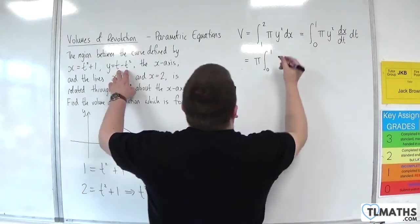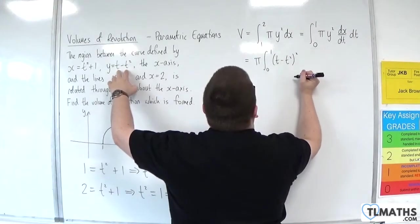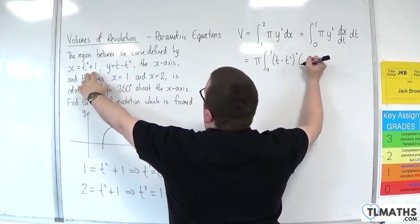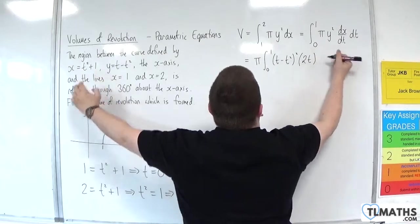Zero to 1. We've got y squared, which is t take away t squared squared, times by dx by dt, which is 2t. And we've got the dt.